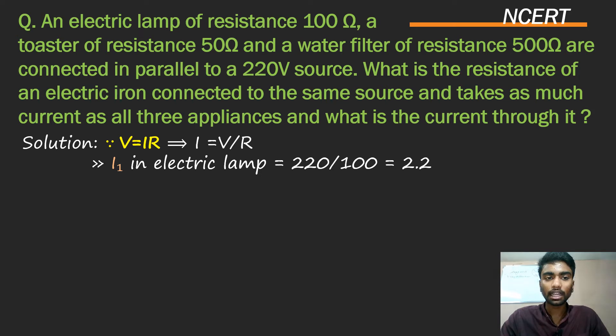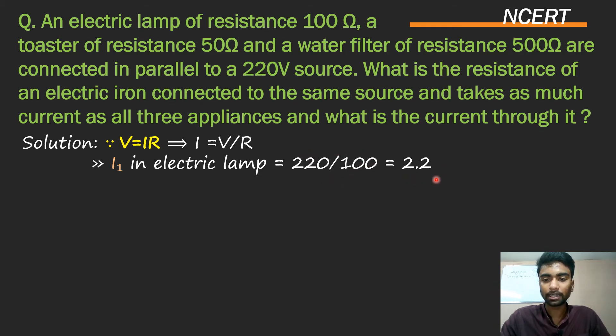Electric lamp ki resistance 100 ohm di hui hai, toh i1 = V divided by R = 220 divided by 100, so we get 2.2 ampere.